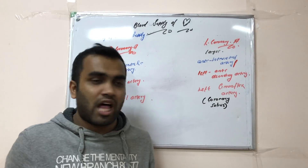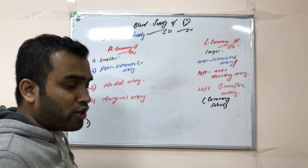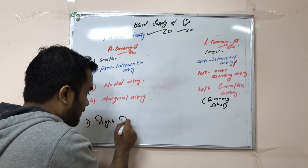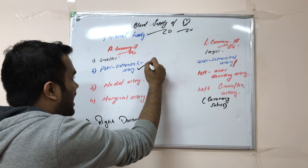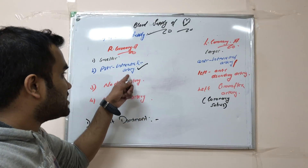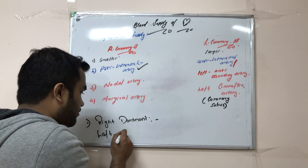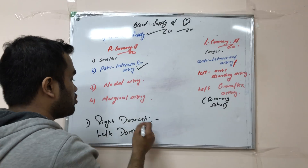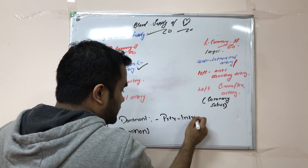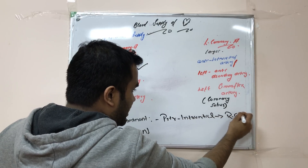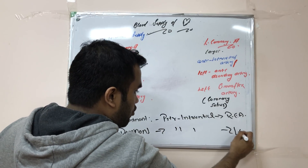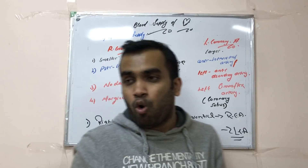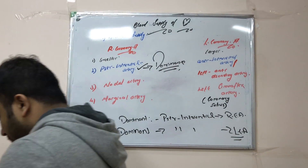An important concept is the dominance of the heart. The heart is called right dominant when the posterior interventricular artery comes from the right coronary artery. It is called left dominant when the posterior interventricular artery arises from the left coronary artery. So the posterior interventricular artery decides which is right dominant or left dominant.